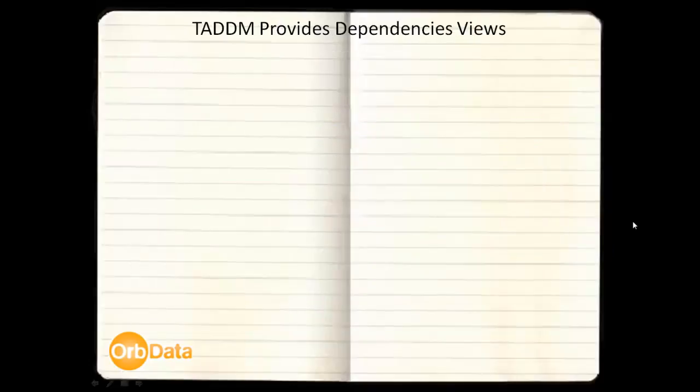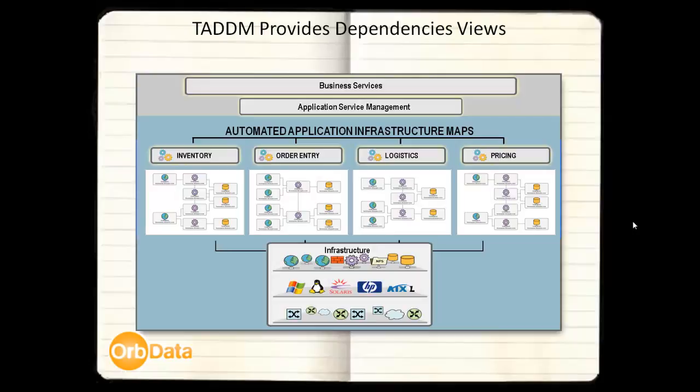TADM maps the dependencies and relationships a customer needs to understand the impact of a change to their critical application services. With TADM, you can now see how the IT complexity from the earlier chart is mapped to show what objects support important applications and services.